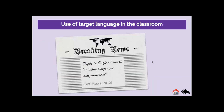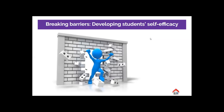Even more strikingly, a 2012 report from BBC News indicated that just 9% of 14- to 15-year-olds in England can use their first foreign language independently. This is especially shocking when you compare it to the figure in Sweden, for example, where the percentage goes up to 82%. But this is no surprise at all, due to the number of challenges we face to engage students in practicing speaking.